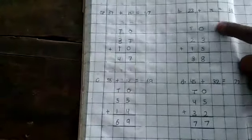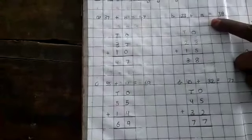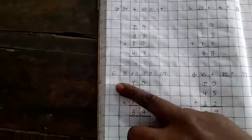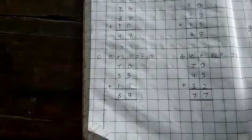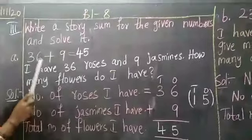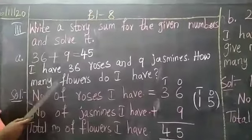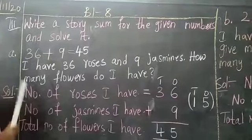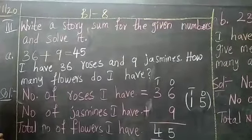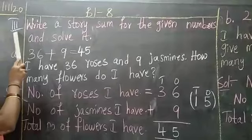Same like that only B1, 23 plus 15. C1 is 55 plus 14. D1 is 45 plus 32. Come to third bit. Next on the page, draw the margin, write the date. In each page I want you to write the date children.